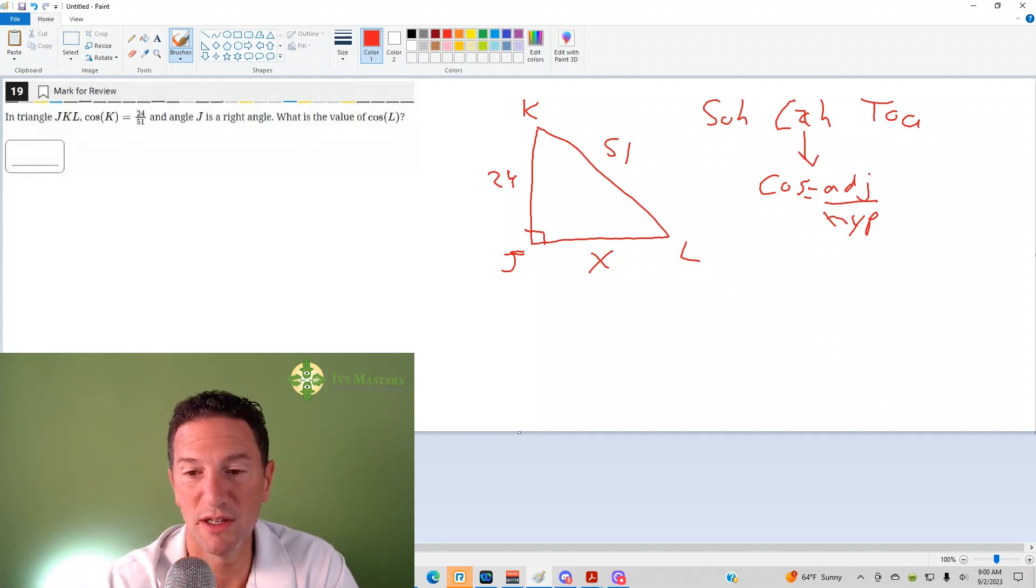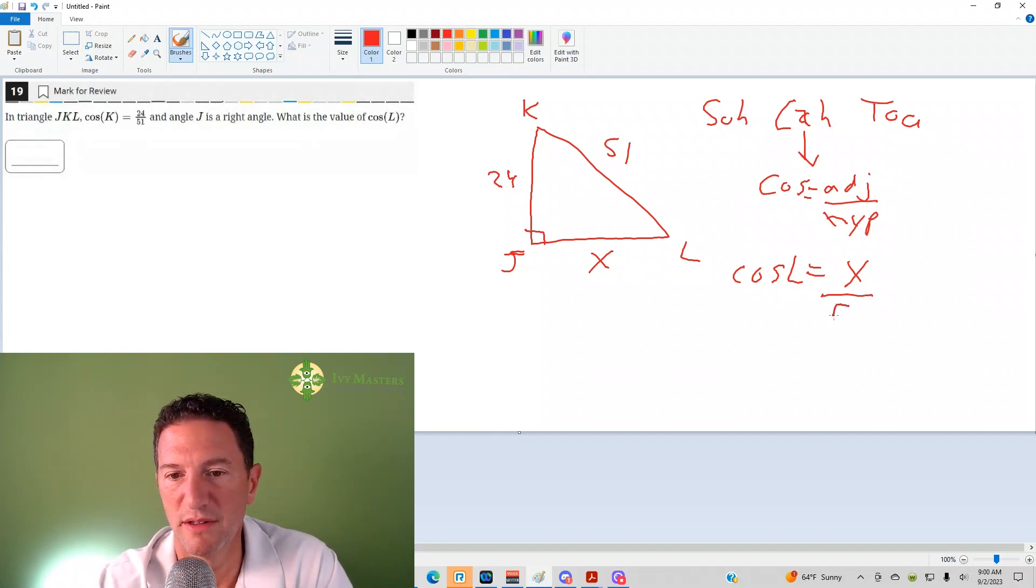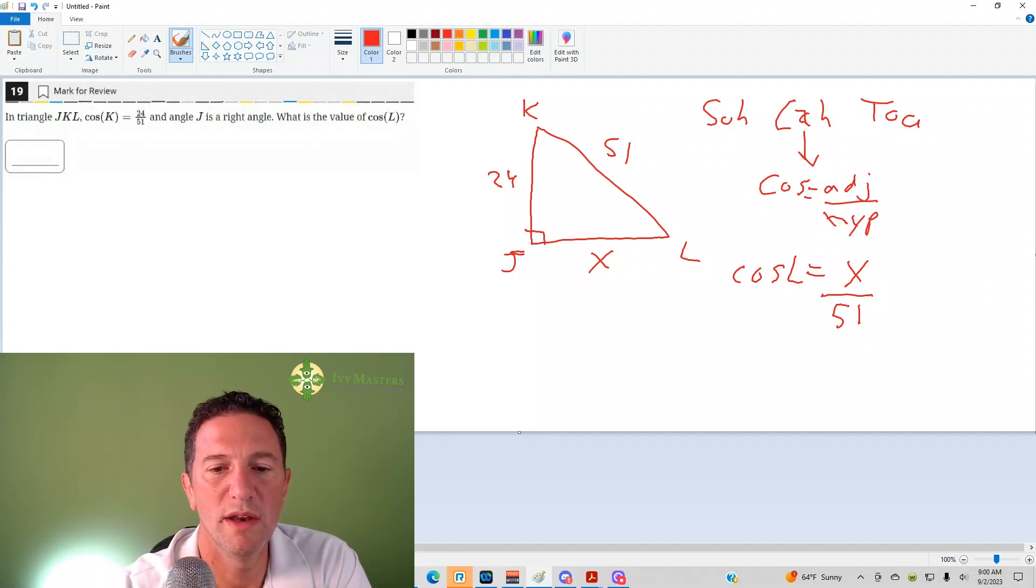Pythagoras was a really interesting guy. It's almost like a religious sect he had, but it was like math stuff too. Look him up. So anyway, cosine of L is going to equal adjacent, which in this case is X over hypotenuse, which in this case is 51. We've got to solve for that side of X. What is the Pythagorean theorem? Pythagorean theorem is A squared plus B squared equals C squared.